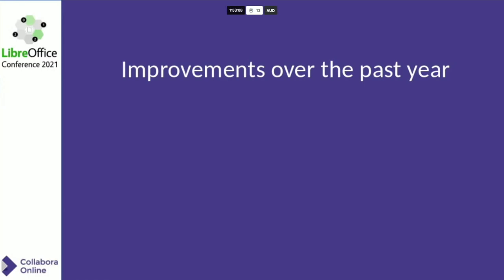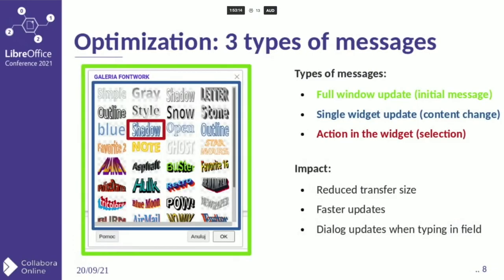Now we will take a look at what has changed since the last conference. First I was focused on optimization. To avoid sending the full JSON every time we do some action, I prepared three different types of messages. The first is a full window update, used for the initial creation of a dialogue or component — it is sent only once. Later, when we receive updates from any widget, we use the second type: a single widget update, which sends only the updated widget content.